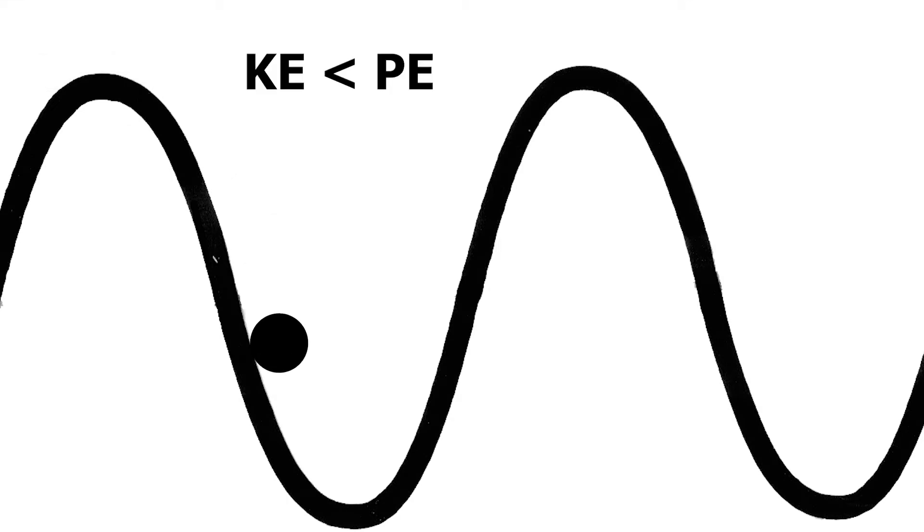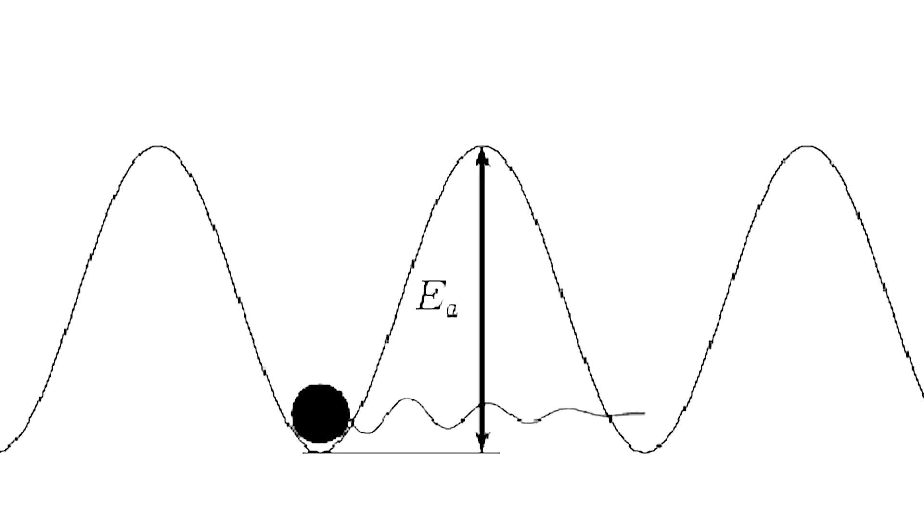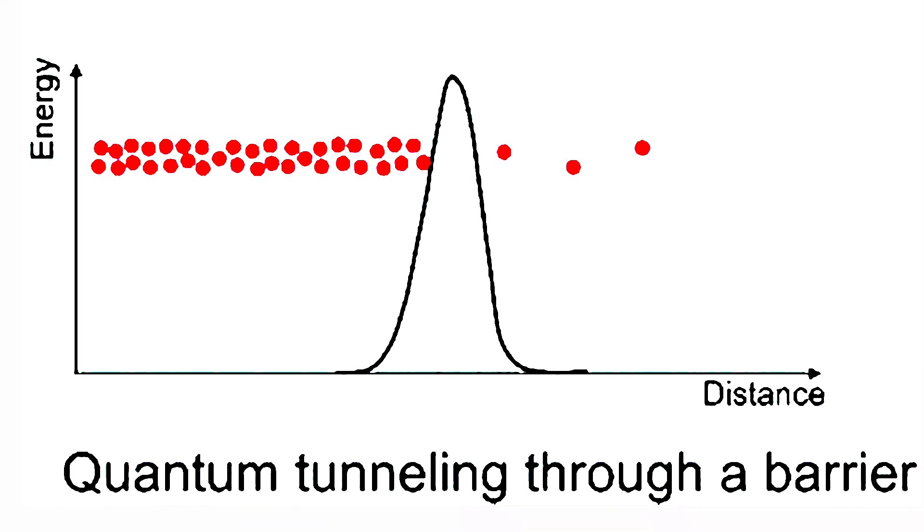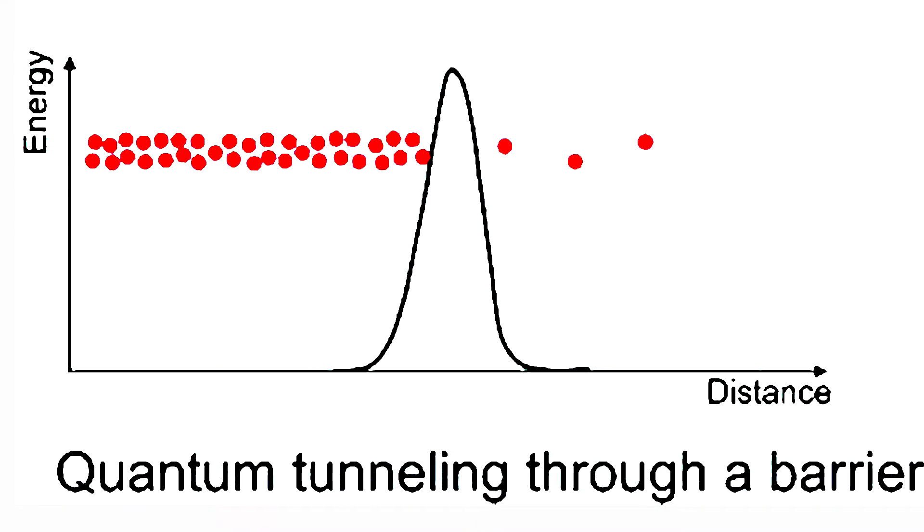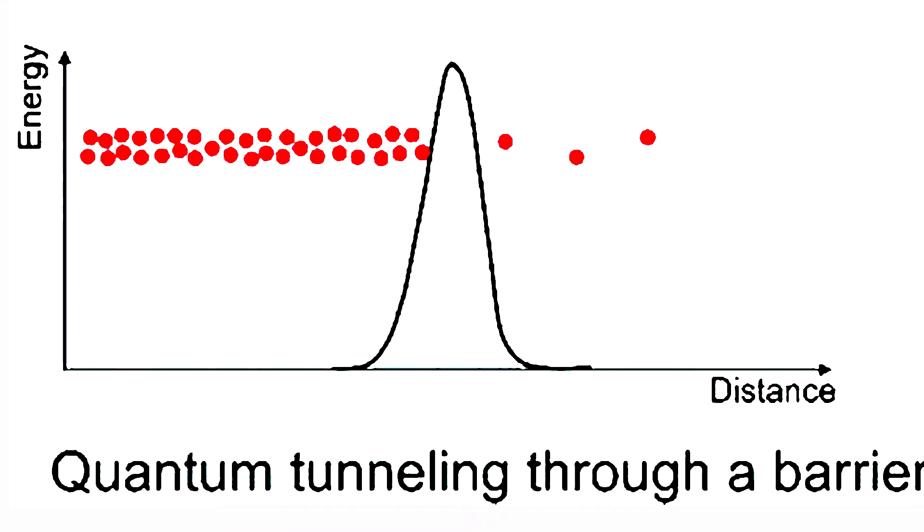However, if the ball does not have enough kinetic energy to overcome the barrier, it will never roll from one valley to the other. In contrast, when quantum effects are taken into effect, the ball can tunnel through the barrier to the other valley, even if its kinetic energy is less than the potential energy of the barrier to the top of one of the hills.